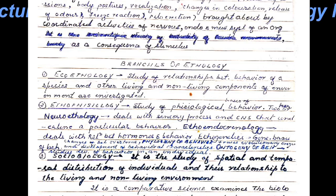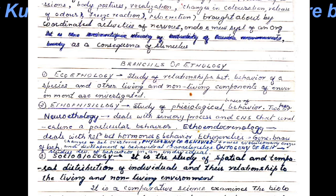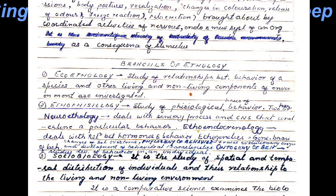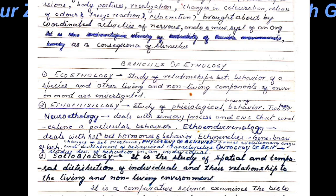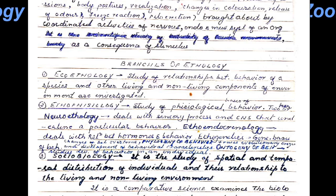In ethogenetics, we study the genetic basis and analysis of a behavior. The fixed action pattern, which we are going to study later, will fall in this category.